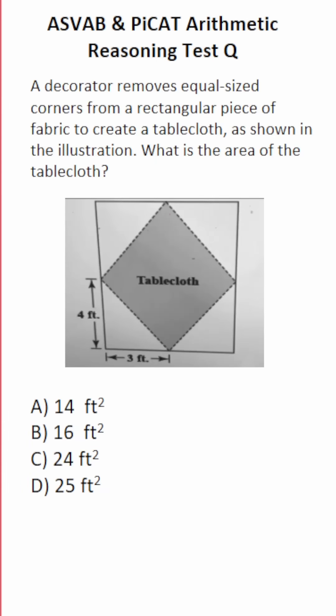This arithmetic reasoning practice test question for the ASVAB and PiCAT says a decorator removes equal size corners from a rectangular piece of fabric to create a tablecloth as shown in the illustration. What is the area of the tablecloth?